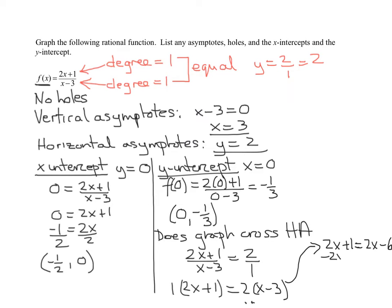So let me write it up here. So I get 2x plus 1 equals 2x minus 6. Subtract 2x from both sides. And if you notice, all your x's disappear. And you get 1 equals negative 6, which is definitely false. So it does not cross the horizontal asymptote.